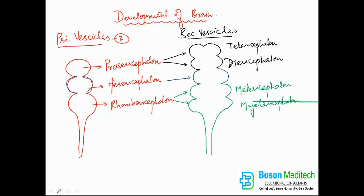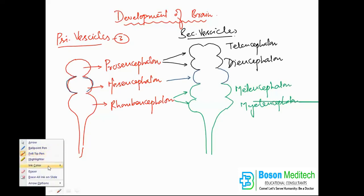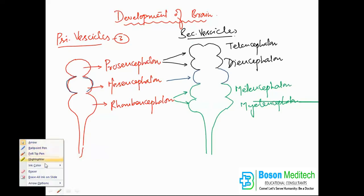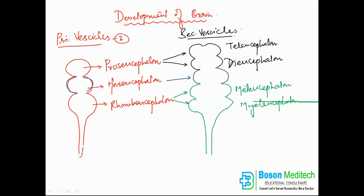So to summarize: the prosencephalon develops into the telencephalon and diencephalon; the mesencephalon remains as the mesencephalon; and the rhombencephalon develops into two secondary vesicles, the metencephalon and the myelencephalon. In total you have got five secondary vesicles.